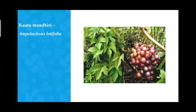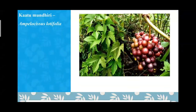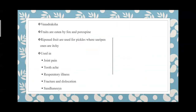The next one is Amphilicious latifola — Kathumundiri — considered as one of Draksha's substitutes. It is very endemic to laterite ecosystems. The fruits are eaten by fox and porcupine. The fruits are edible for us when ripe, but when unripe they are itchy. Tribes use these fruits for making pickles.